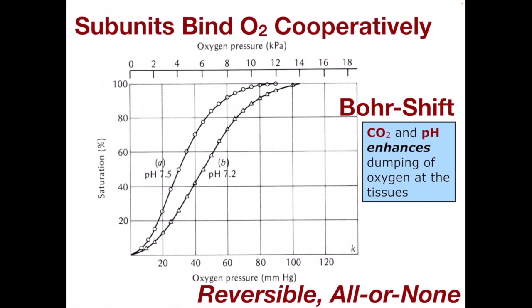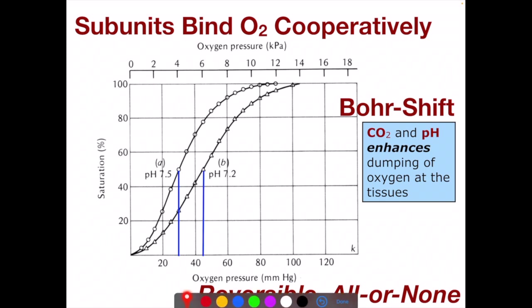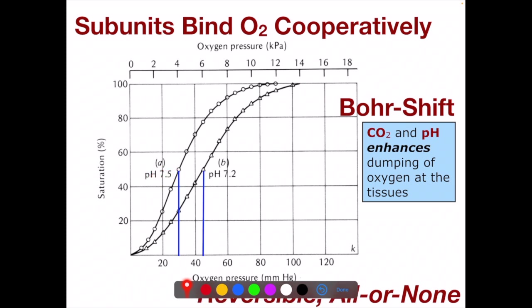CO2 and pH enhance dumping of oxygen at the tissues. To see the difference in oxygen affinity between two curves — say one at pH 7.5, like arterial blood, and one at pH 7.2, like around the tissues — at about 50% saturation, the half saturation point, where half the hemoglobins are bound with oxygen and half are not.